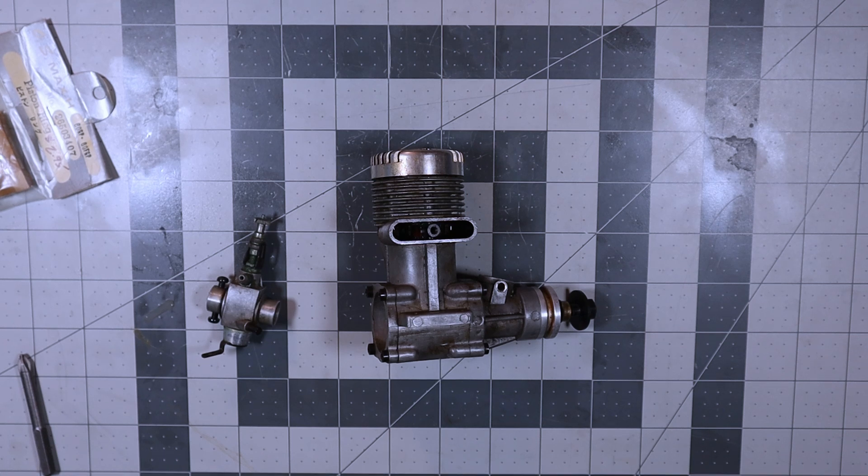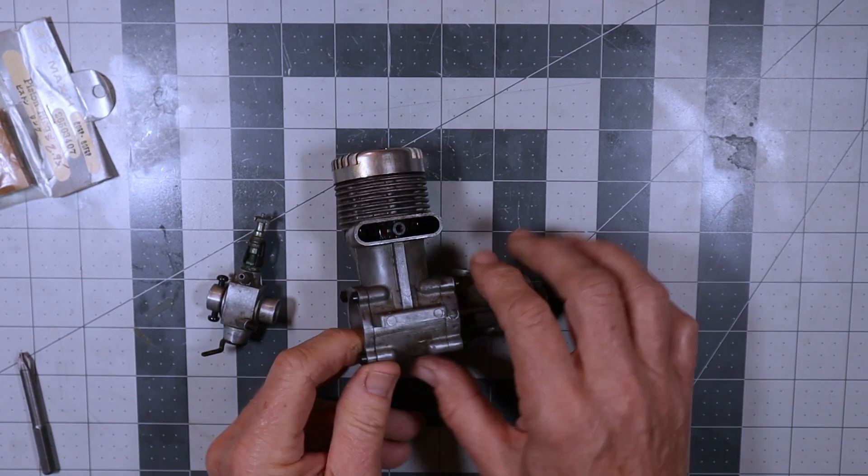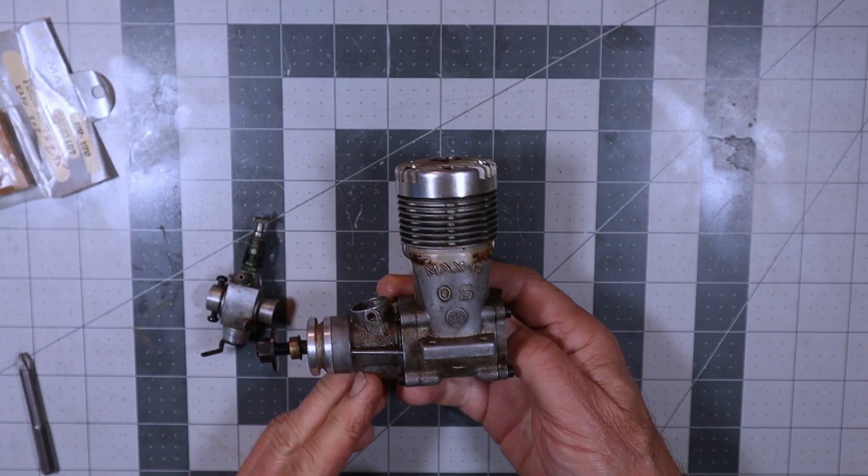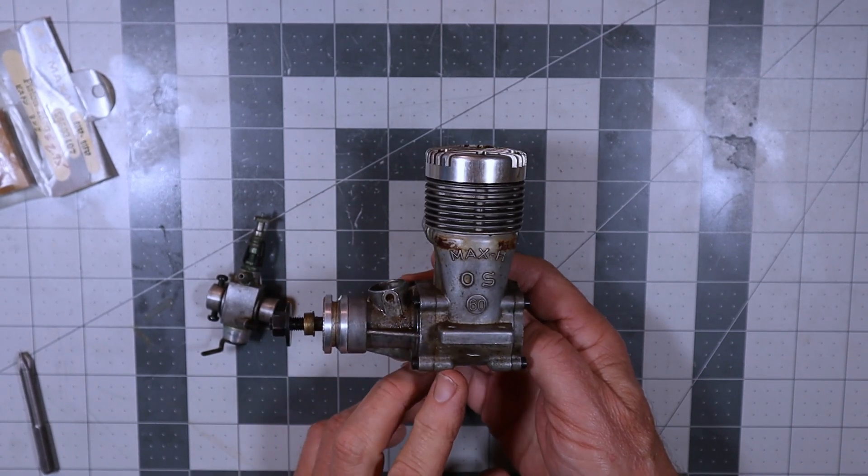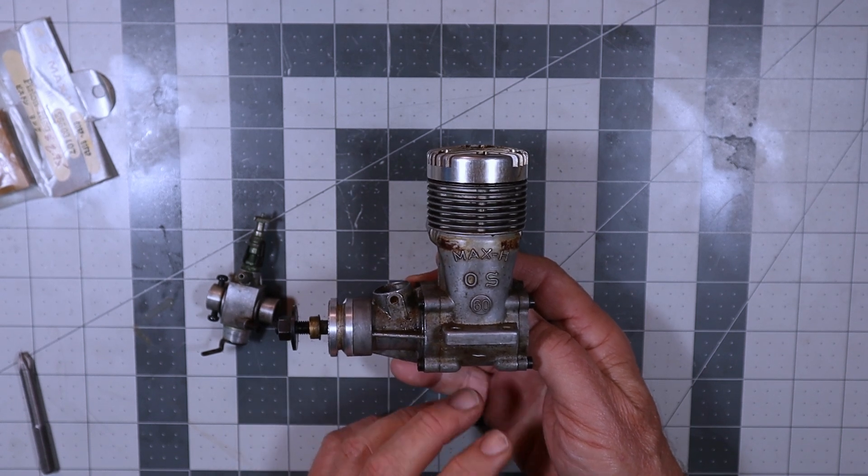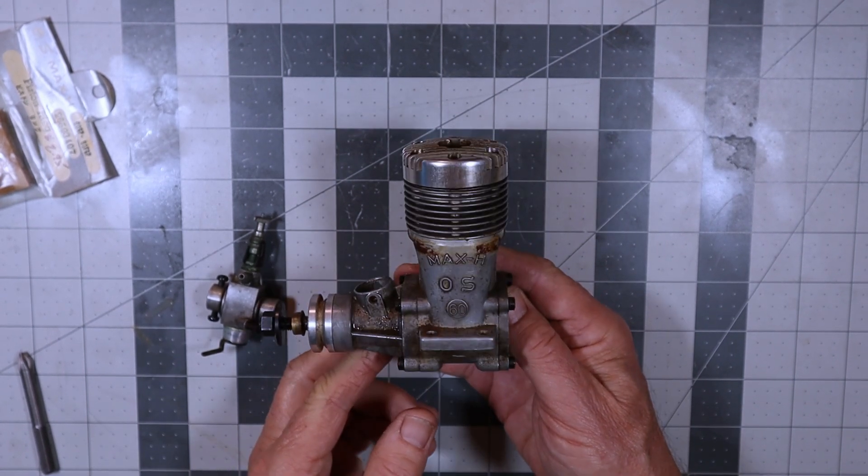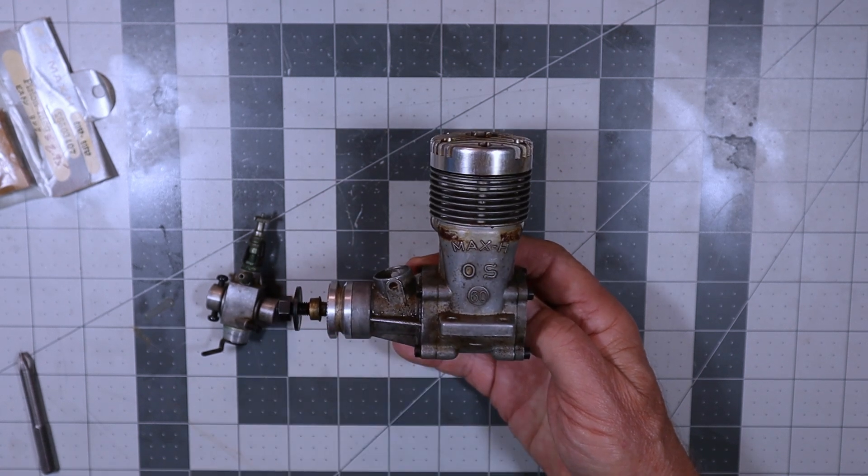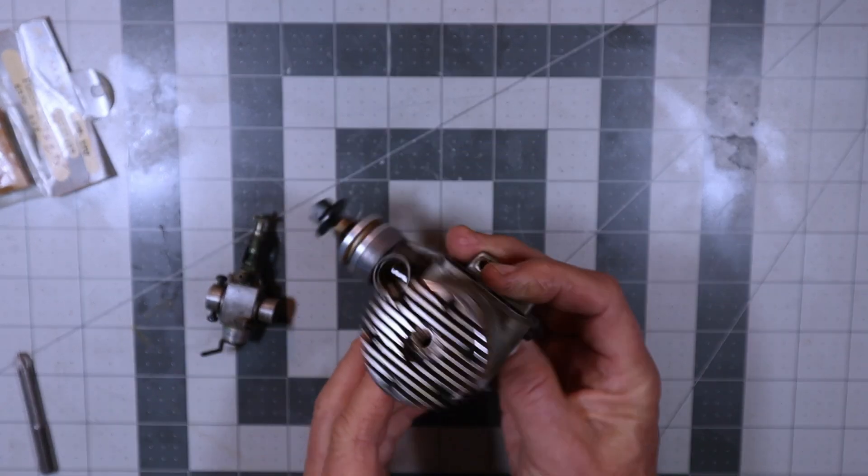Good morning and welcome to my hobby table yet again. On the table today I've got an old OS engine. It's a Max H OS 60 engine and this was one of the engines included in the box of engines that Kirk sent to me. This engine dates back at least as far as 1967. I don't know what the production life was of this engine.